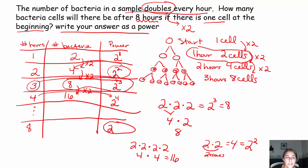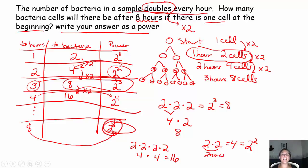So if you notice the pattern, after eight hours it will be 2 to the eighth power. You'll have 2 to the eighth bacteria. There is our final answer written as a power — 2 to the eighth.